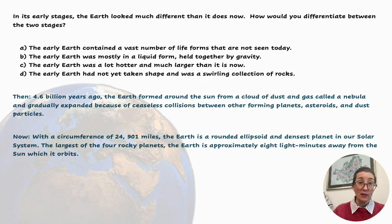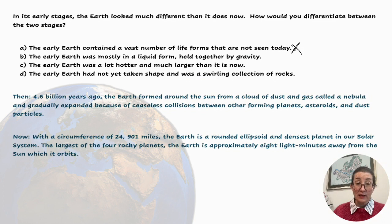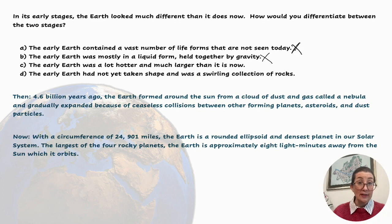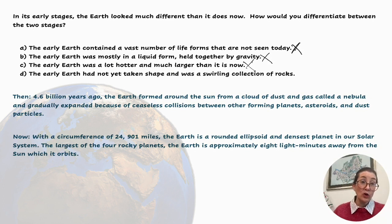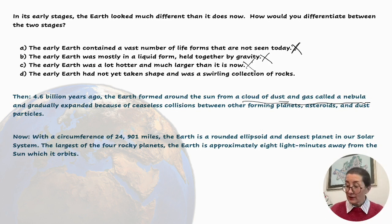So now let's look at the possible answers. A: The early Earth contained a vast number of life forms that are not seen today — that is not the case. B: The early Earth was mostly in a liquid form held together by gravity — we know that it was not; it was gas and dust. C: The early Earth was a lot hotter and much larger than it is now — this was definitely not the case. D: The early Earth had not yet taken shape and was a swirling collection of rocks. We can see it was a cloud of dust and gas called a nebula, so that fits with our answer, D.